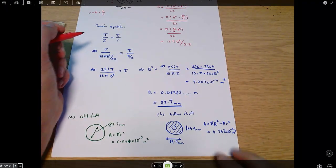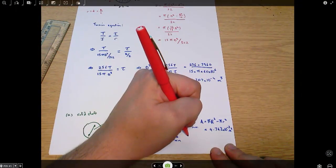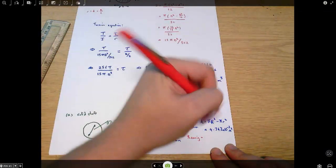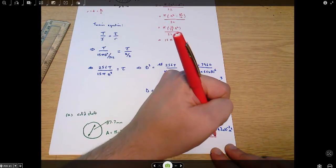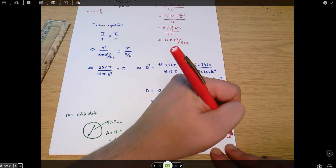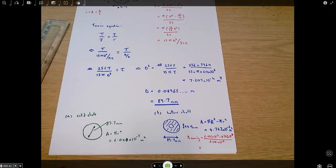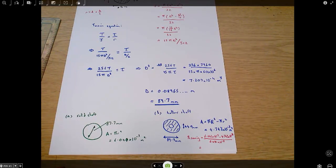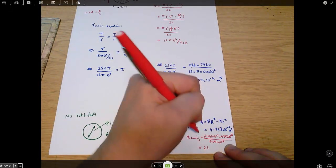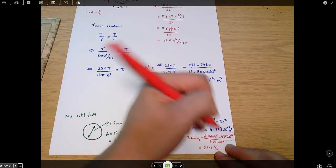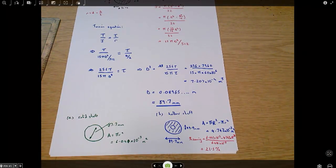And in some ways, that's kind of the key outcome from this question. Percent saving equals 6.041 times 10 to the minus 3 minus 4.743 times 10 to the minus 3, all over 6.041 times 10 to the minus 3, which equals 21.5%. So we're saving about over 20% of our material by using a hollow shaft rather than a solid shaft. And this question is all about how you do the calculation to find that.